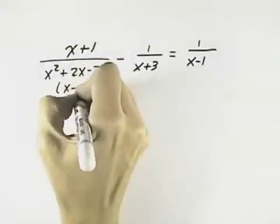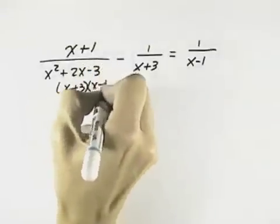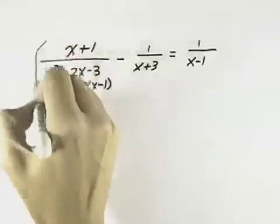In this case, we have x plus 3 times x minus 1. So I can see those two factors are the ones that make up the least common denominator.